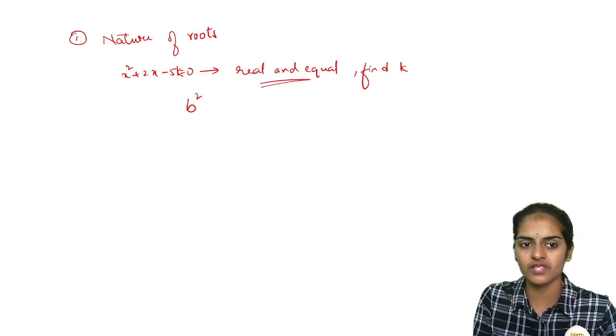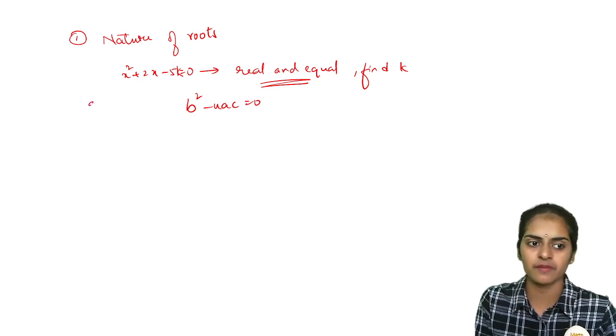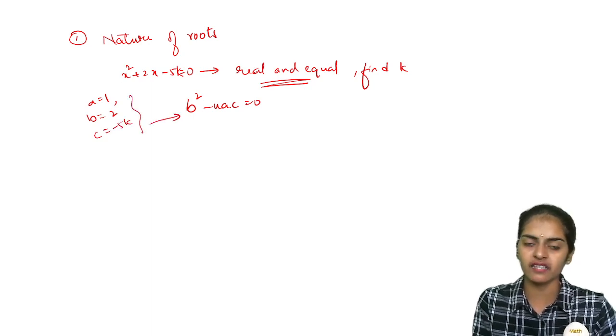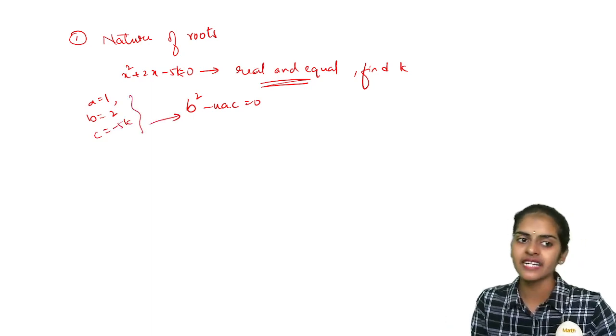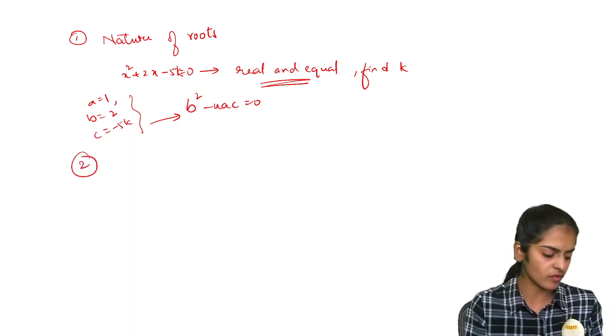Since the roots are real and equal, b square minus 4ac equals to 0. So you will substitute all the values. a is 1, x square coefficient, b is 4, x coefficient and c is minus 5k. Substitute all the values, solve it to get the value of k. So this is one model problem you may get.